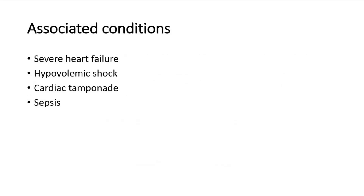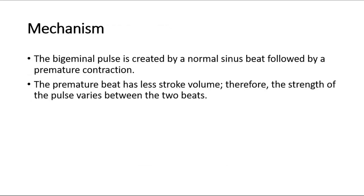The bigeminal pulse is shown in this picture. This type of pulse is associated with severe heart failure, hypovolemic shock, cardiac tamponade, and sepsis. For its mechanism, the bigeminal pulse is created by a normal sinus beat followed by a premature contraction. The premature beat has less stroke volume, therefore the strength of the pulse varies between the two beats.